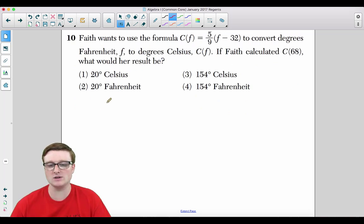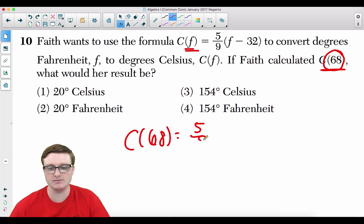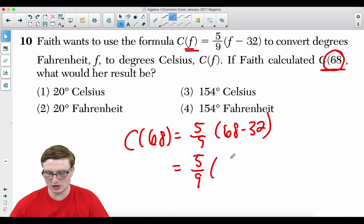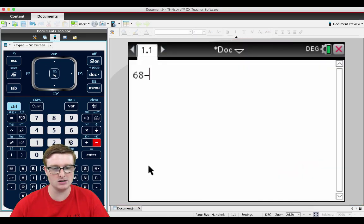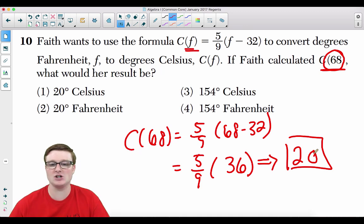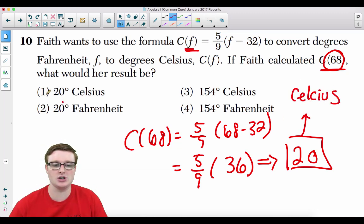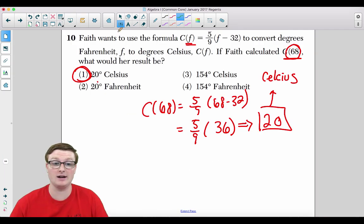Number 10. Faith wants to use the formula C(F) = 5/9 times (F - 32) to convert degrees Fahrenheit F to degrees Celsius C(F). If Faith calculated C(68), what would her result be? All you need to do is take 68 and plug it in for F. So we get C(68) is equal to 5/9 times (68 - 32). We then get 5/9 times, let's see, 68 minus 32, that's going to be 36. So we take 5/9 of 36. That is going to be equivalent to 20. So that is the degree measurement, but be careful. 68, that is F, Fahrenheit. This is going to be 20 degrees Celsius. So your answer for this one is going to be choice 1.